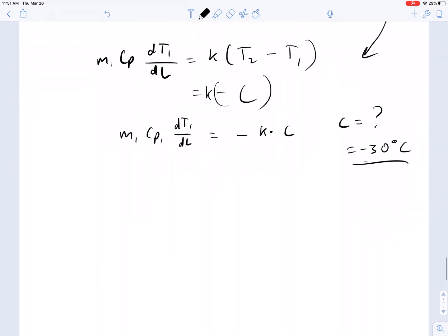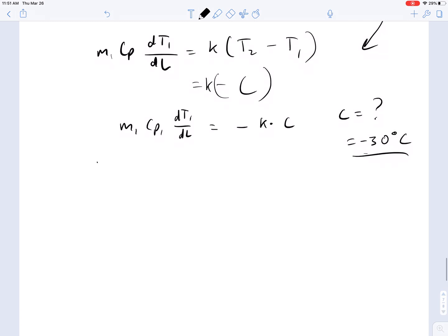So the integral of this is trivial. What's the integral of a constant? The integral of a constant is linear. So this leads to a linear profile as opposed to an exponential. The co-current you saw earlier is exponential. The counter-current is linear.